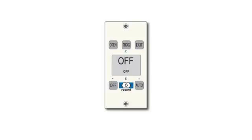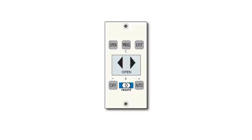Turning the door on at the start of each business day is as easy as choosing the door operation mode that best serves the expected pedestrian traffic flow. The most common settings are Auto for standard two-way traffic, Exit Only for one-way traffic, and Hold Open for extremely high traffic or when the door needs to remain open for extended periods of time.